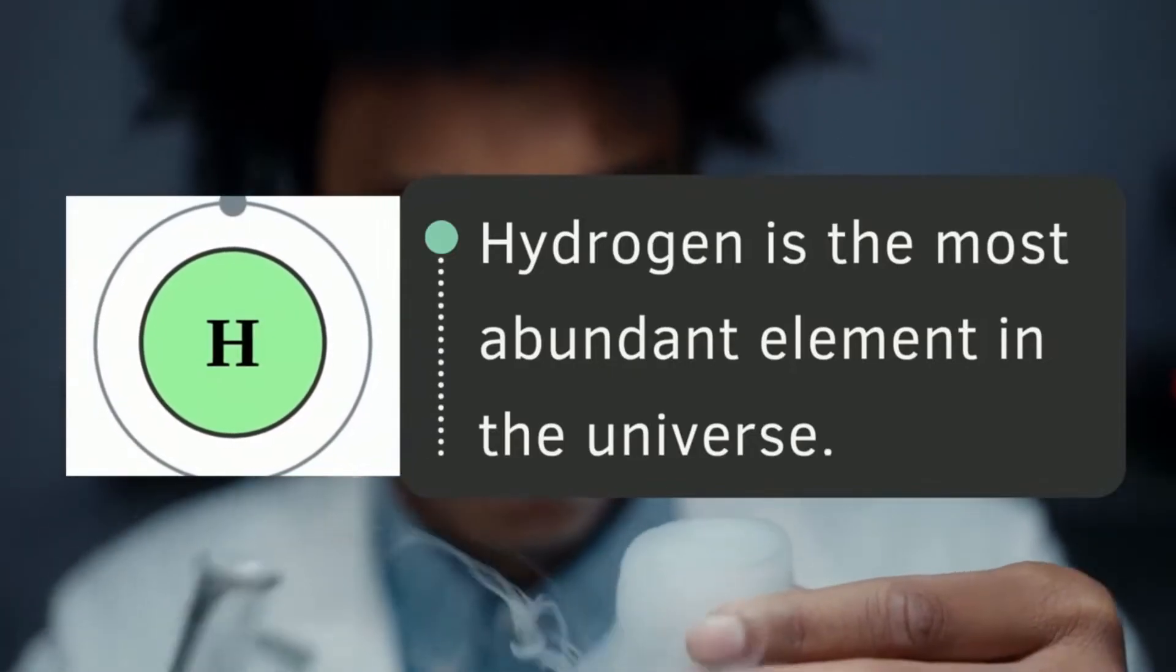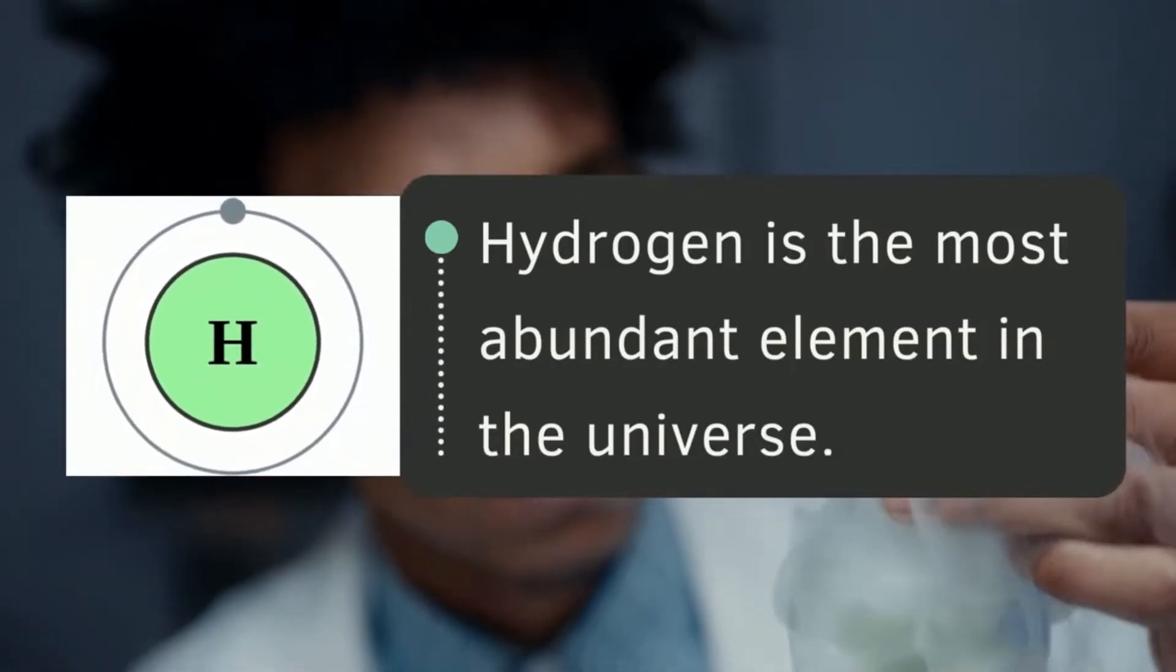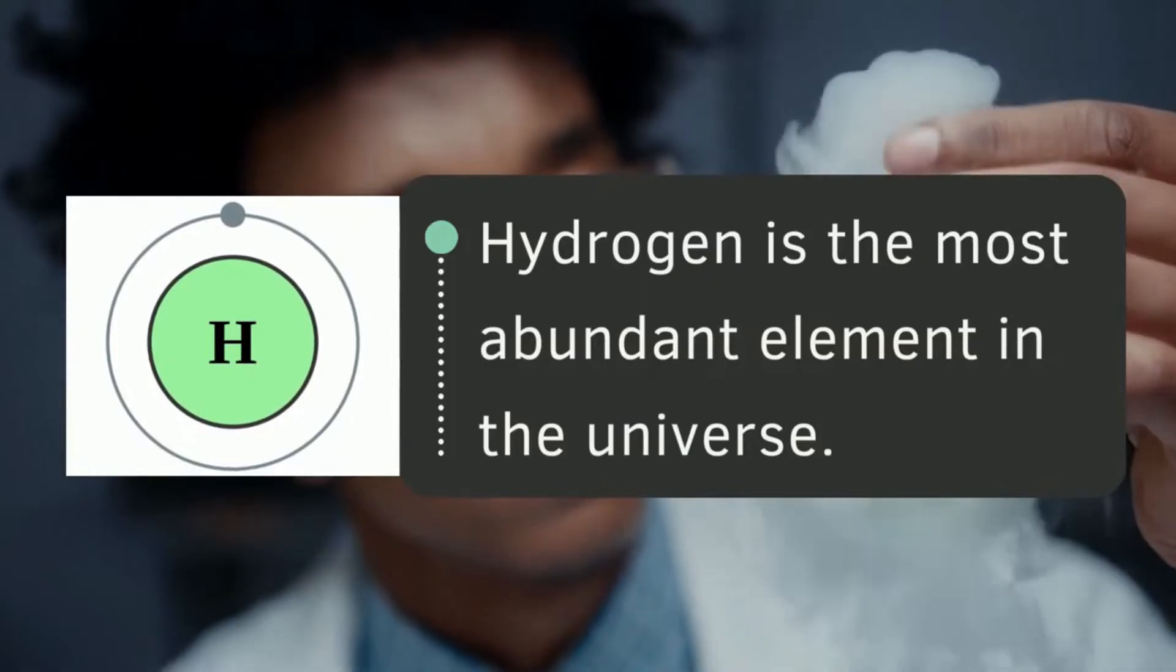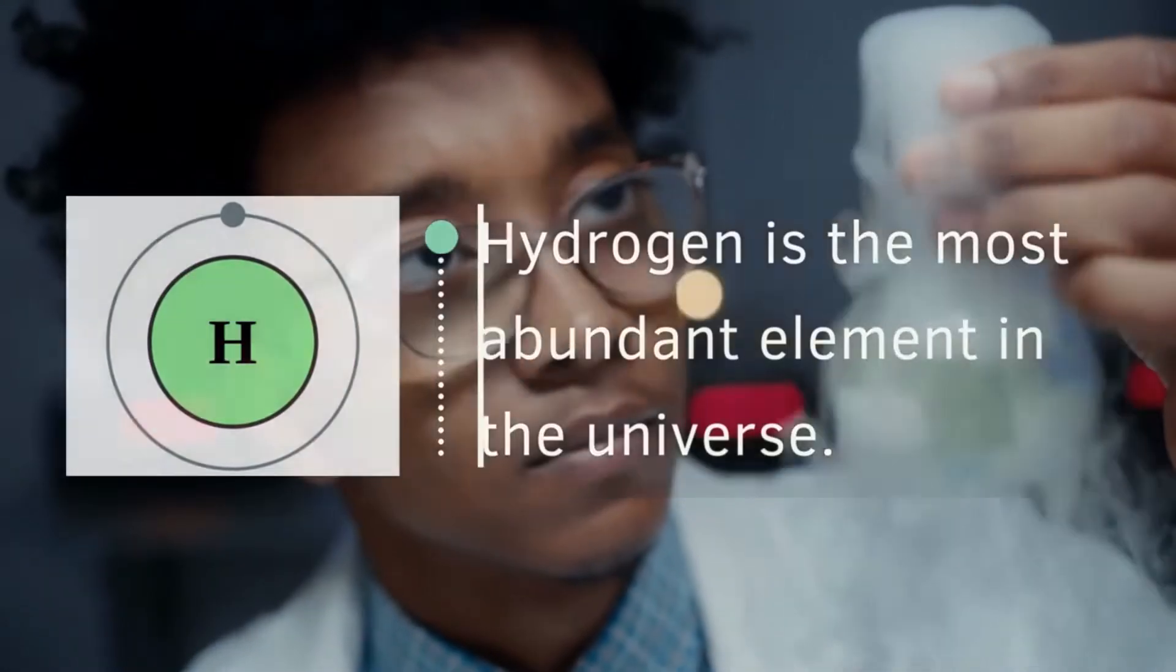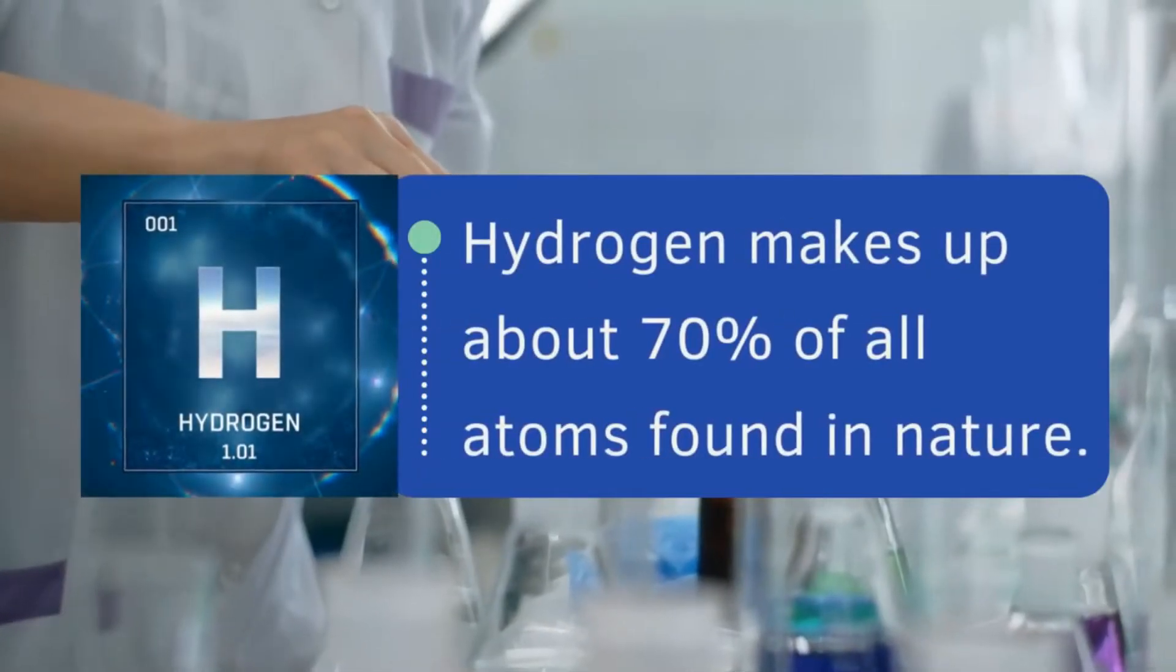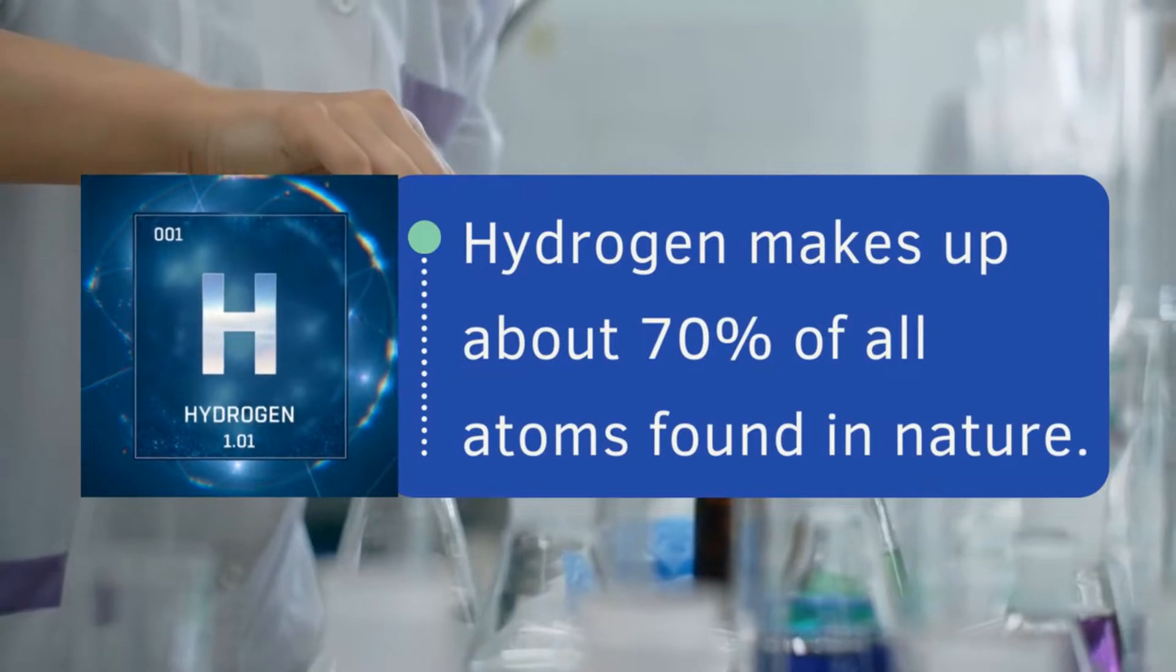Hydrogen. Hydrogen is the most abundant element in the universe. It's the most common element there is. Hydrogen makes up about 70% of all atoms found in nature.